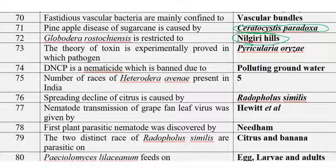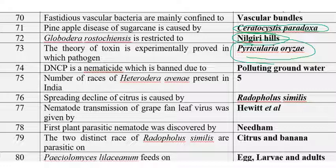The theory of toxin is experimentally proved in the rice blast pathogen — Pyricularia oryzae or Magnaporthe grisea. DBCP is a nematicide that has been banned due to groundwater pollution.